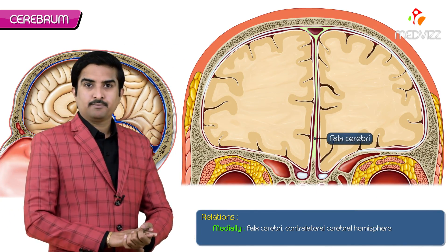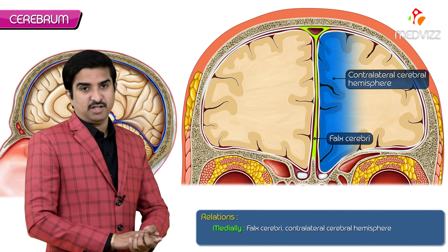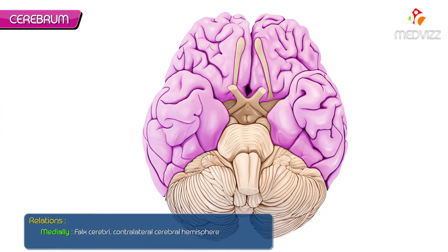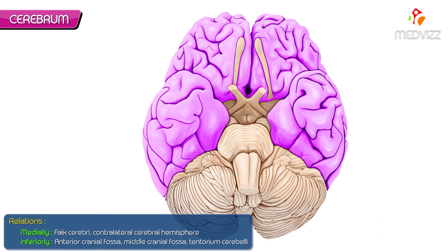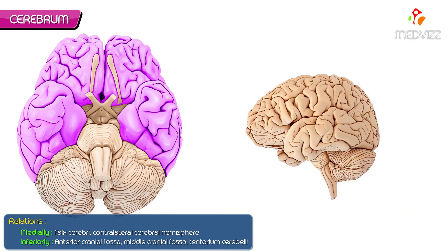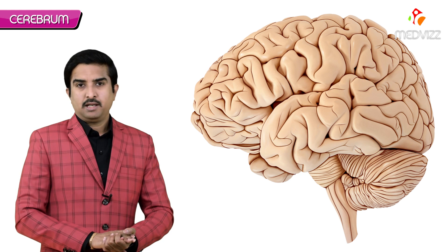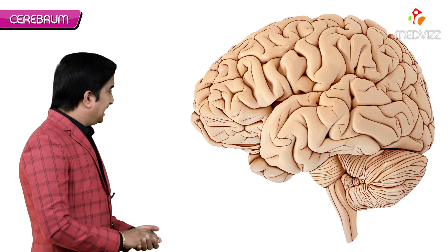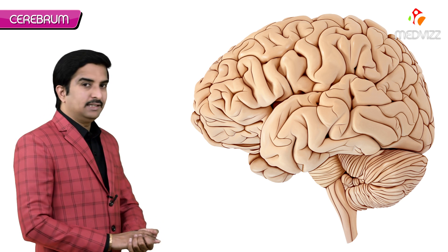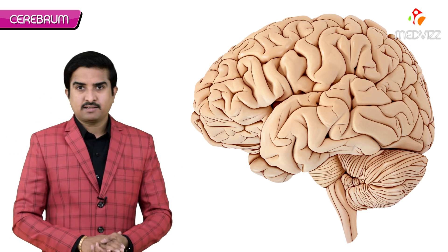Regarding relations: medially we have the falx cerebri and the contralateral cerebral hemisphere. Inferiorly we have the anterior cranial fossa, middle cranial fossa, and the tentorium cerebelli, which is a tent-like structure.